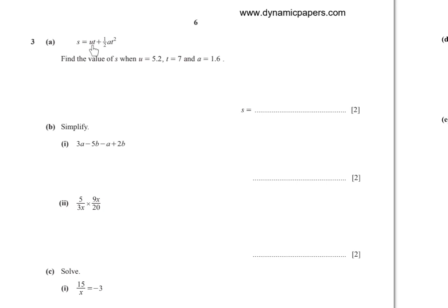Number 3(a): s equals ut plus half a t squared. Find the value of s when u equals 5.2, t equals 7, and a equals 1.6. By substitution: 5.2 times 7 plus half times 1.6 times 7 squared equals 75.6.